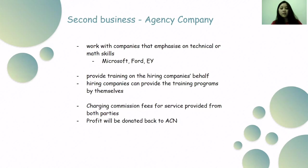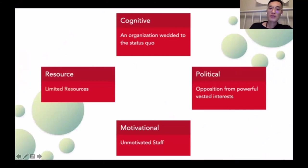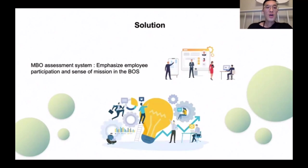Hi, I'm Zijian and I'm going to talk about the four hurdles and our budget. ACN's BOS will face over four hurdles when implementing it. The first is a cognitive hurdle — employees are used to the original business model, service model, and product logic of ACN. It is recommended to introduce the MBO human resource tool, as MBO is mainly for work that is difficult to quantify, emphasizing employee participation, which can effectively improve employee engagement and their sense of mission.